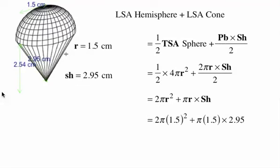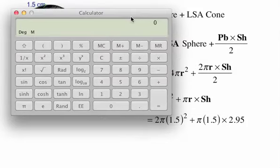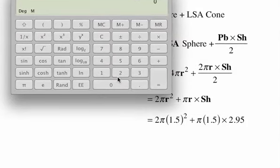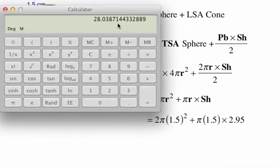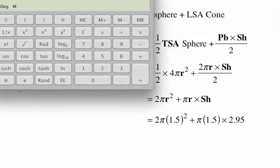So 2 times π times 1.5 all squared plus π times 1.5 times 2.95. It's handy-dandy calculator time. So we have 2 times π times 1.5 squared plus π times 1.5 times 2.95 equals, and we get 28.0387144, and that goes on forever.